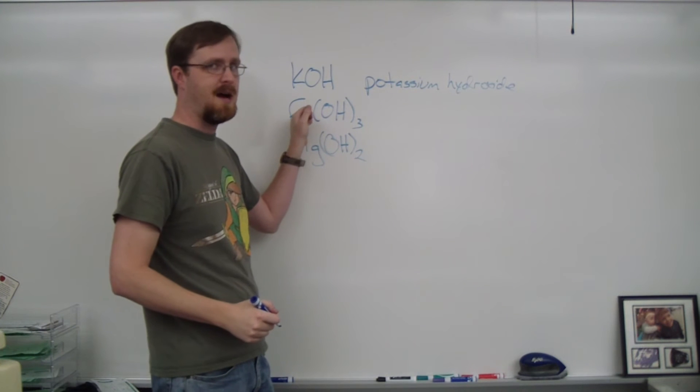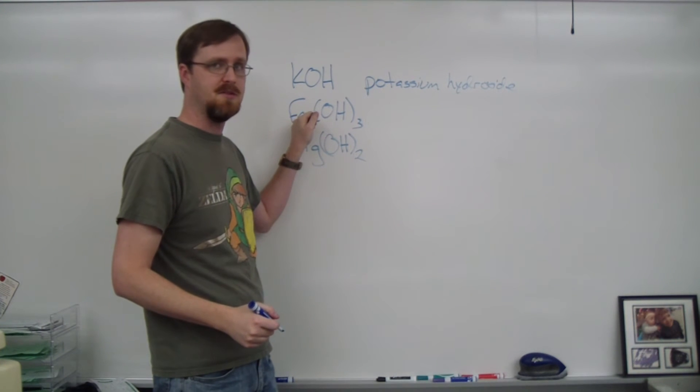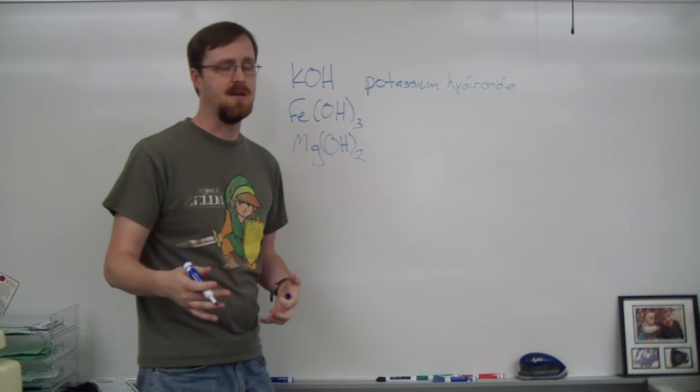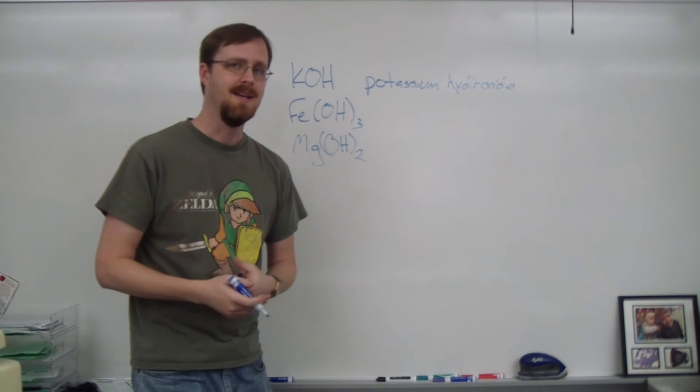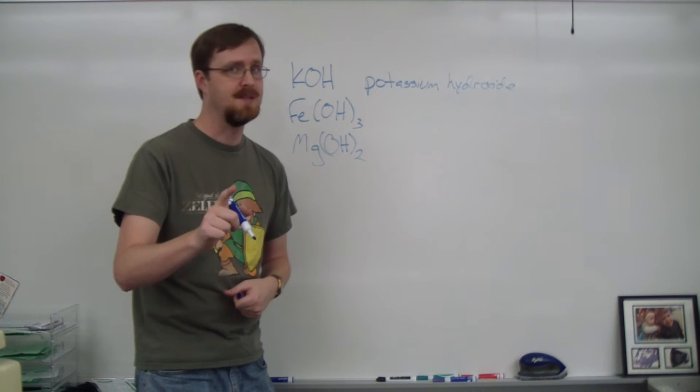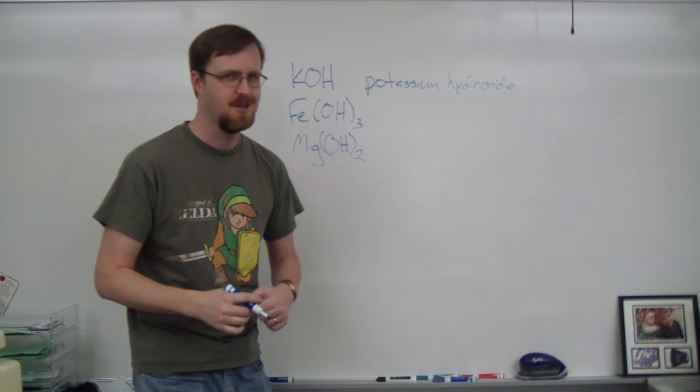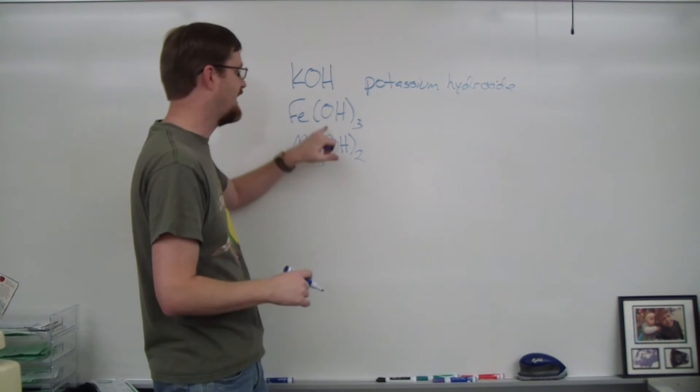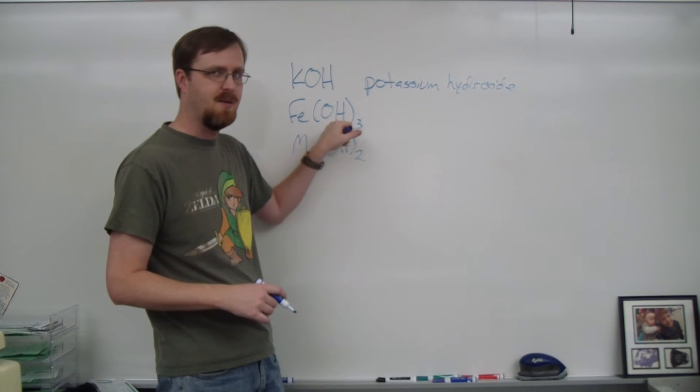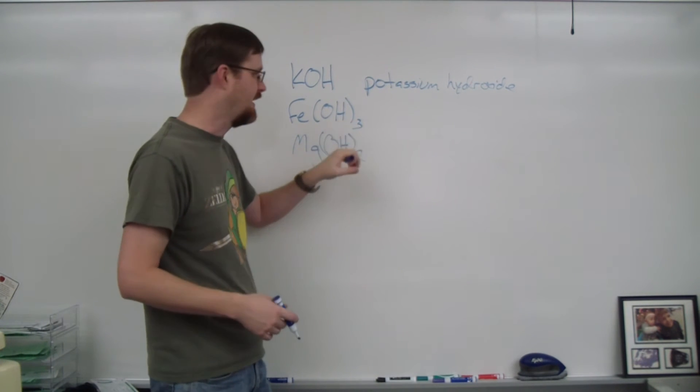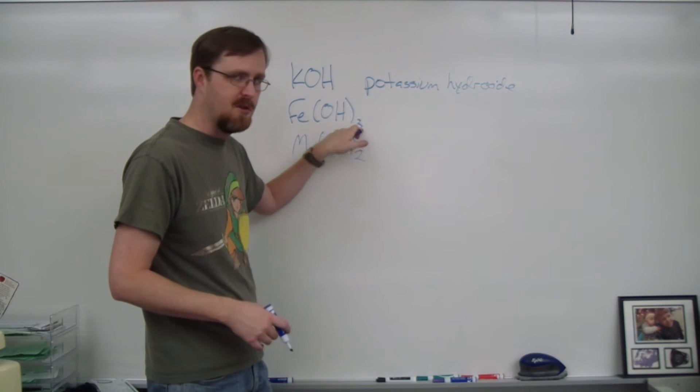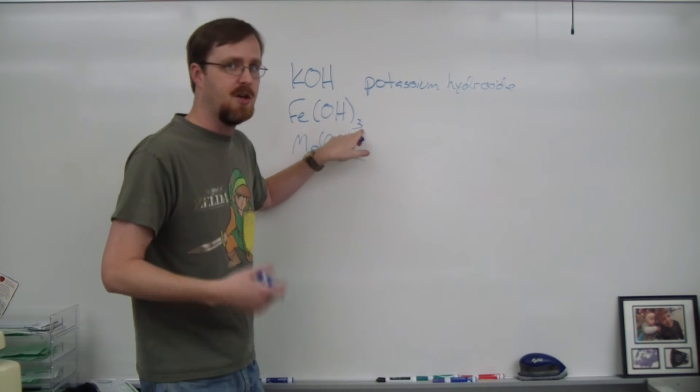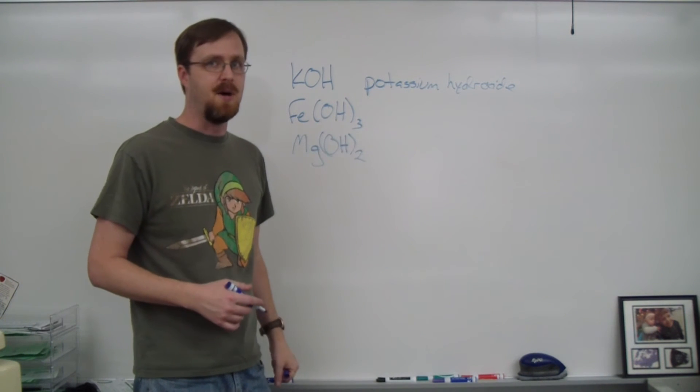Let's take a look at the next one. FeOH3. Well, Fe is iron. And iron is one of our transition metals. And if you recall, a transition metal needs a Roman numeral in the name. And that Roman numeral represents the charge of that ion. Now the nice thing about bases is that the negative ion here is hydroxide, which always has a charge of negative one, meaning that the subscript is the charge of the metal that it's bonded to.